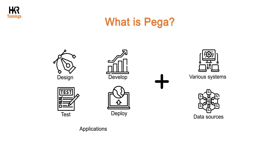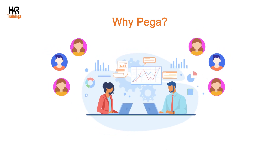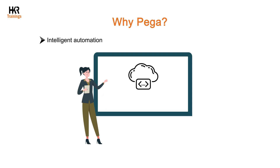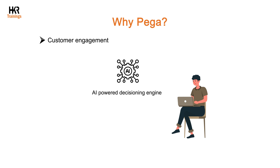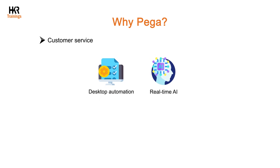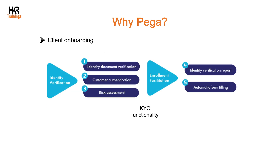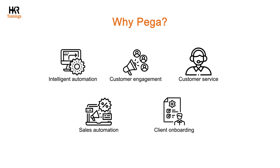Pega offers a number of products and solutions that enable businesses to automate their processes and enhance customer engagement. Through the Pega platform, intelligent automation allows you to build applications quickly using a low-code, cloud-native process automation platform and scale it. Using the Pega Customer Decision Hub, you can stay relevant with an AI-powered decisioning engine. For customer service, from desktop automation to real-time AI, Pega offers applications to simplify service. The sales automation platform helps you sell smarter and improve team performance. Pega has also accelerated and simplified its KYC functionality with faster time to transaction through a quick client onboarding process.